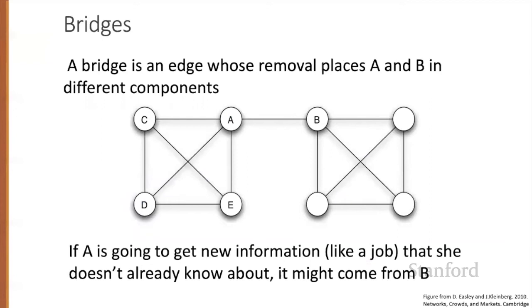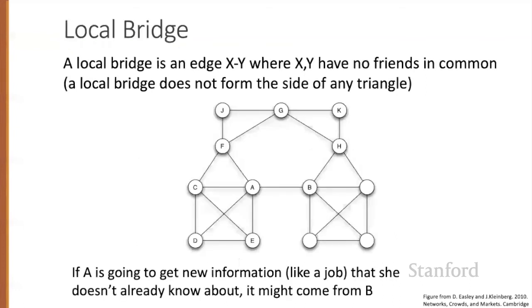We're still on the way to explaining Granovetter's results about why jobs came through acquaintances rather than close friends. We'll need one more definition: a bridge. A bridge is an edge whose removal places nodes like A and B in different components. In actual social networks, true bridges are rare since everyone is pretty connected, but more likely is what we'll call a local bridge — an edge XY where X and Y have no friends in common, so a local bridge doesn't form the side of any triangle. For example, A and B have no friends in common, so the edge between A and B is a local bridge.